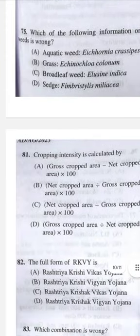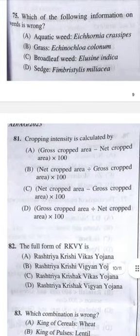Question 81: Crop intensity is calculated by D — gross crop area divided by net crop area × 100.